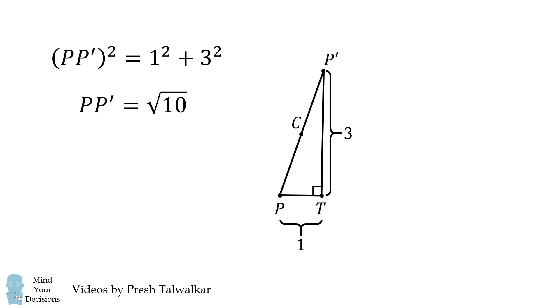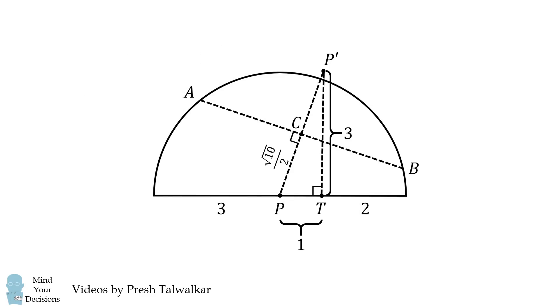Let's construct point C as the midpoint of the hypotenuse. We can then get PC is equal to one half the square root of 10. Since C is exactly halfway between P and P prime, it will also be along line segment AB.